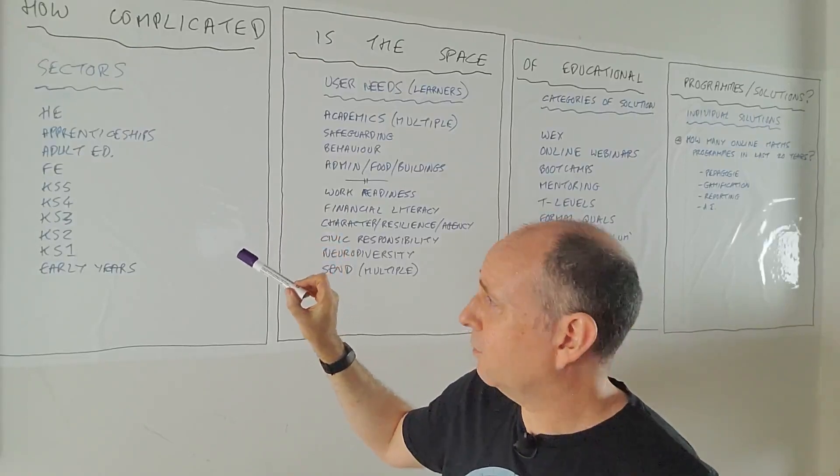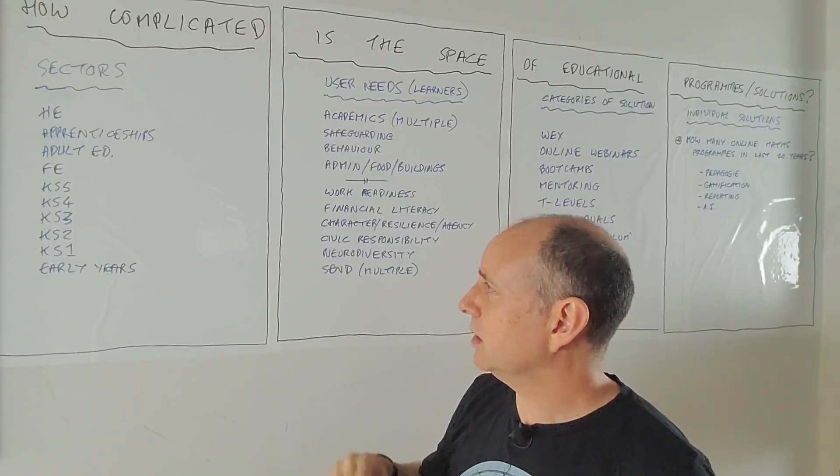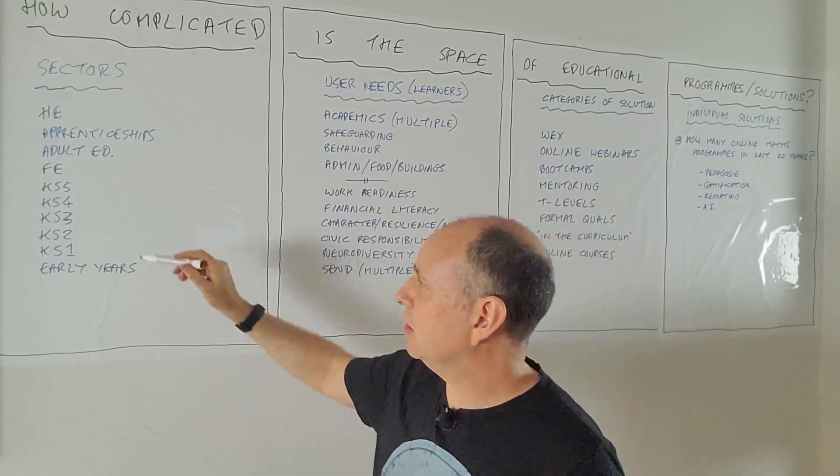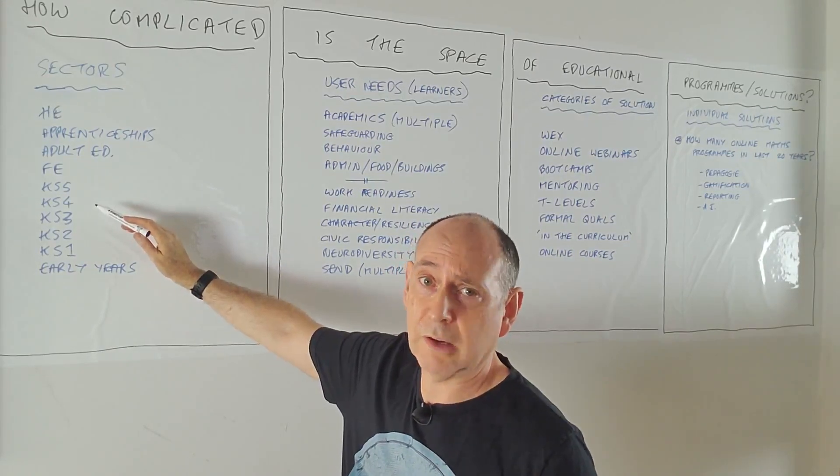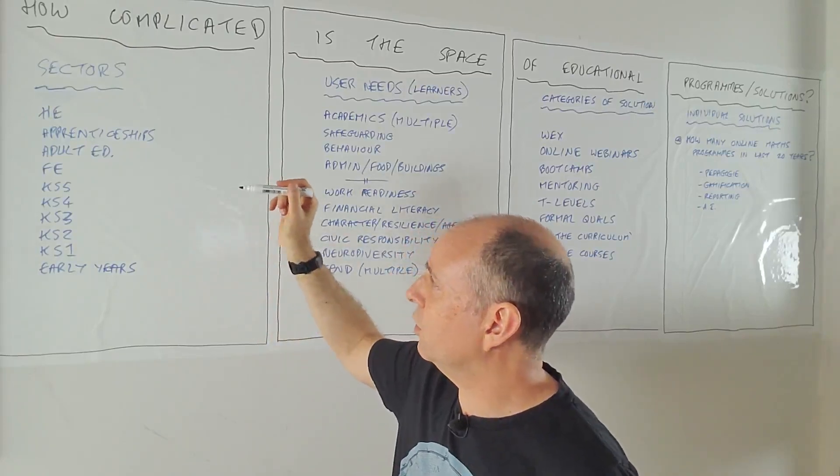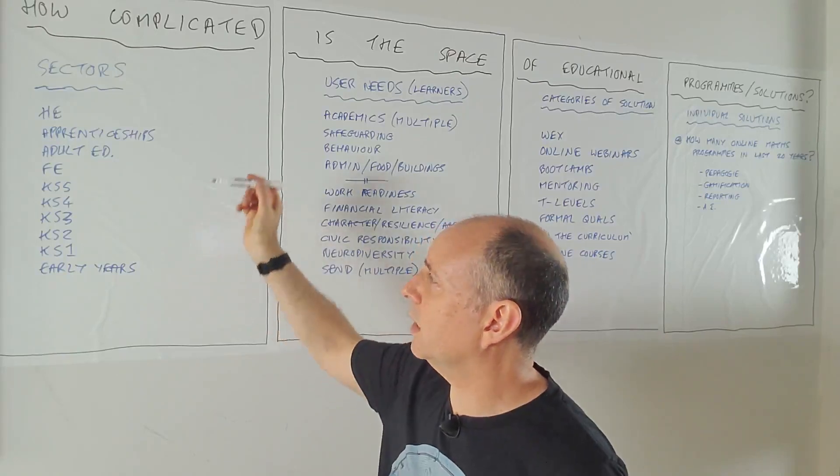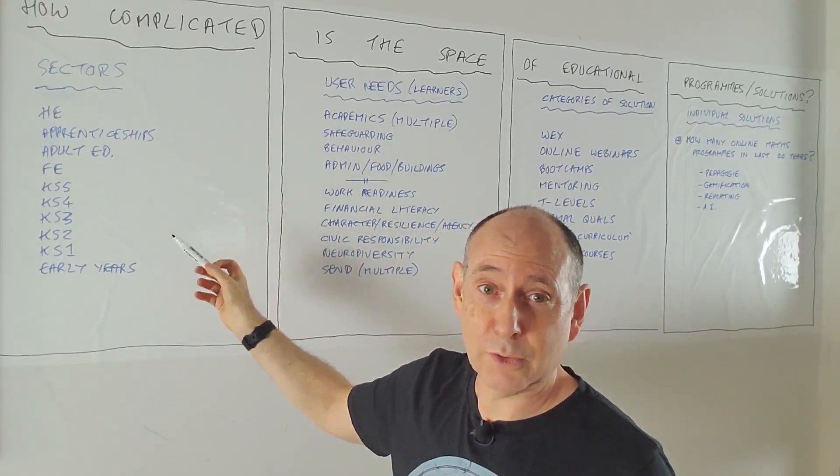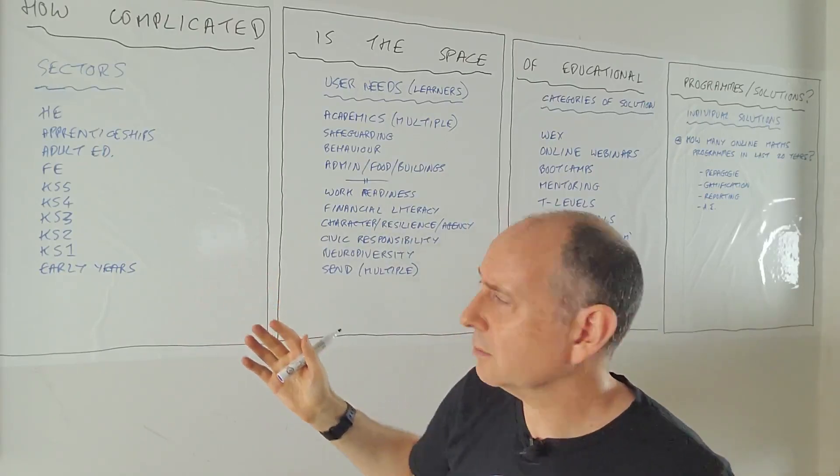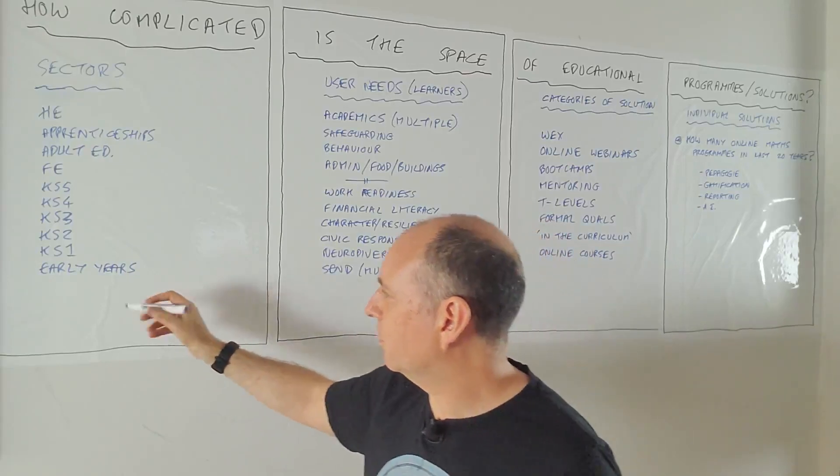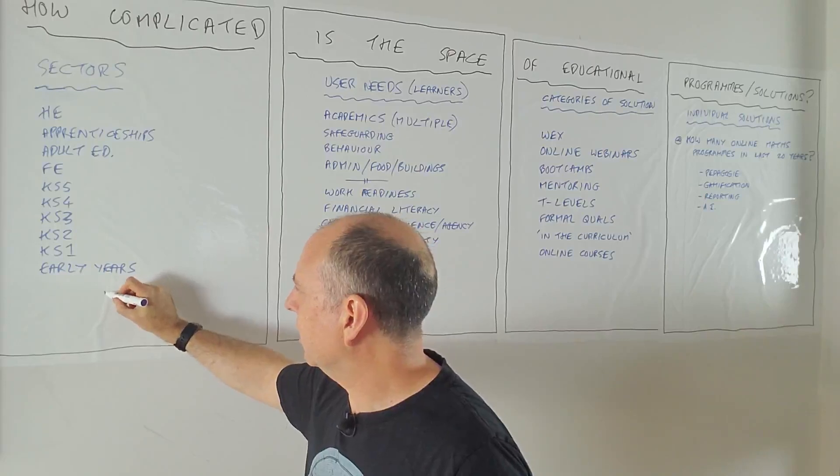I think I've got about 10 on there. HE, apprenticeships, adult, FE, the different key stages, early years. And why do I separate those? Because if you're going to come up with a solution, the solution you come up with for key stage five is probably a different solution to key stage four. Very often it is. And there's definitely different solution providers that operate in the FE sector that don't operate in the school sector because it's that different. So that's the first level of just at the level of sectors, you've got 10.